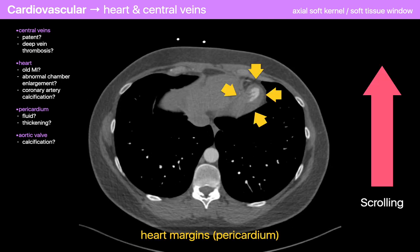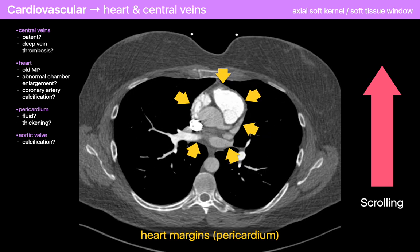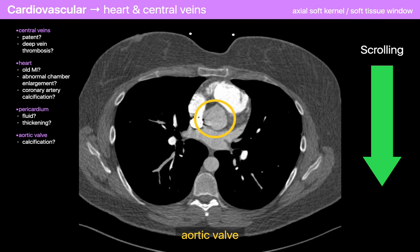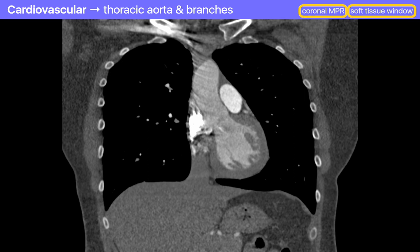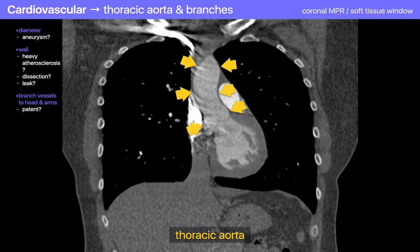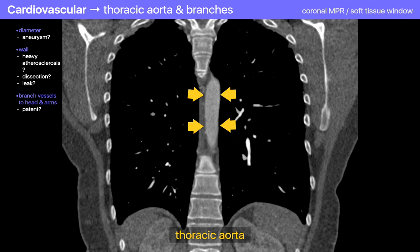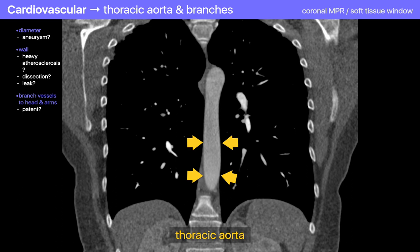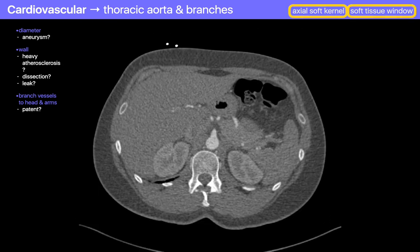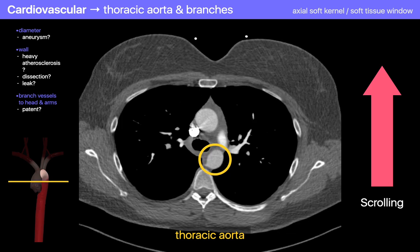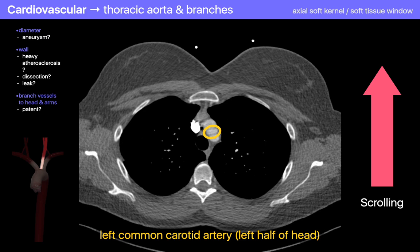I then do my inspection of the pericardium, looking for fluid, soft tissue thickening, and calcification. Then I take a look at the aortic root for aortic valve calcification. The next part of my search is the thoracic aorta and its branches — usually starting on the coronal views, looking at its course, diameter, degree of atherosclerotic calcification, plaque, and any intramural thrombus. The coronal MPRs are where I may drop caliper markings to estimate the aortic diameter. I then go back to the soft kernel images on a soft tissue window to take another look at the thoracic aorta and also peek at the large vessels branching from the aortic arch.